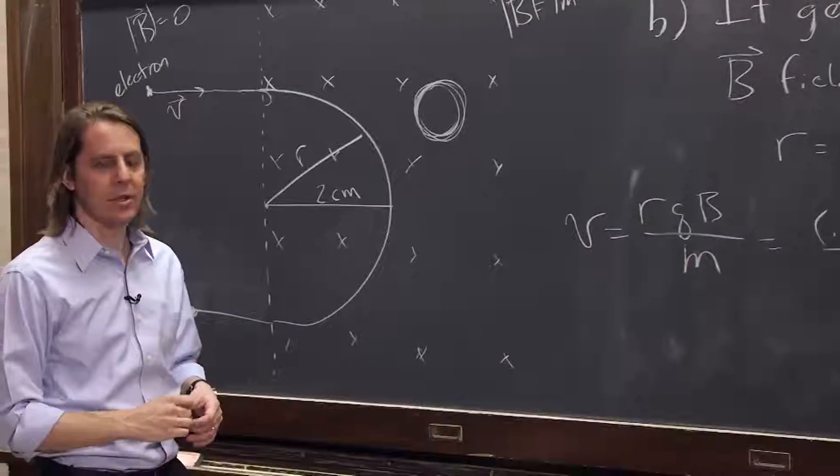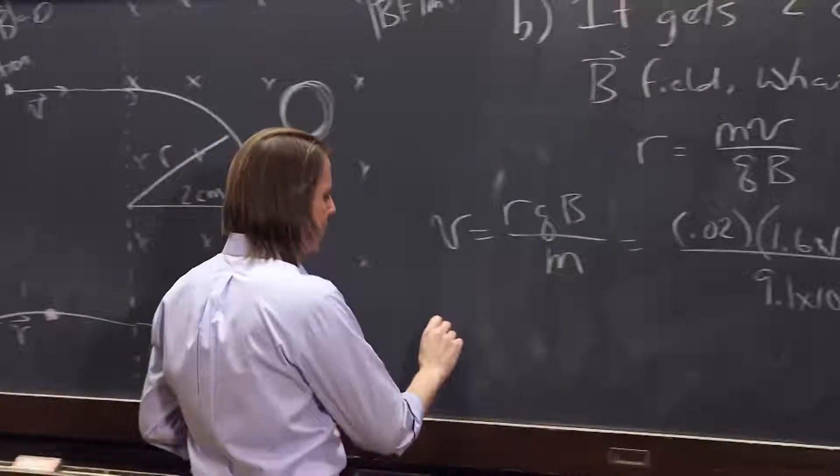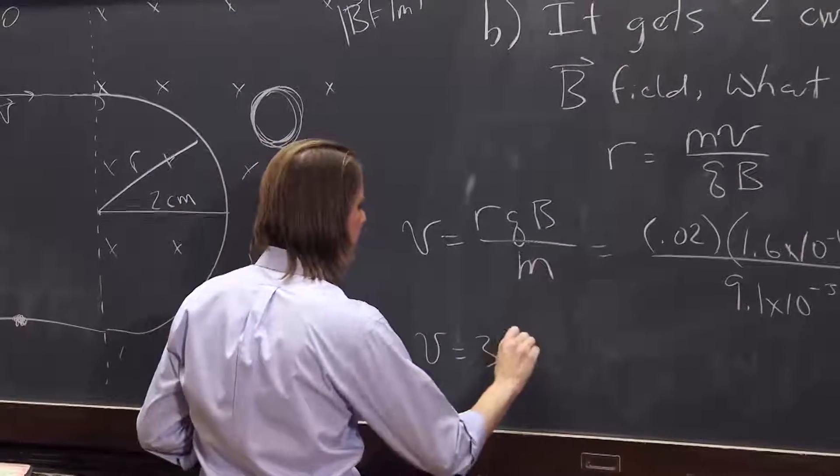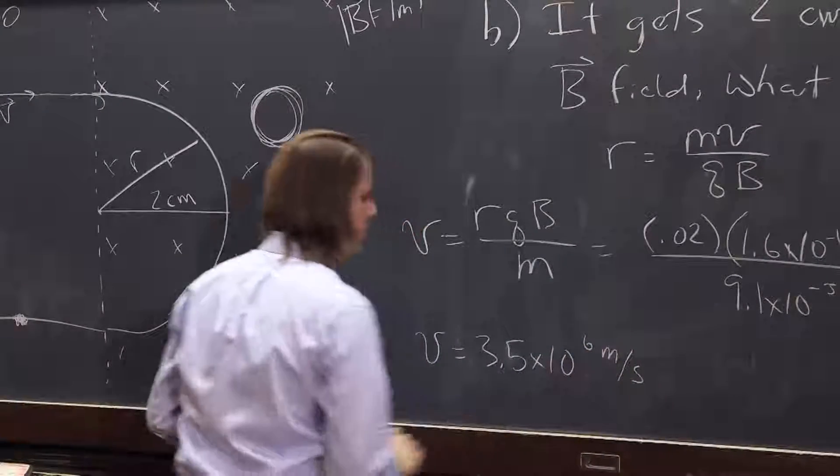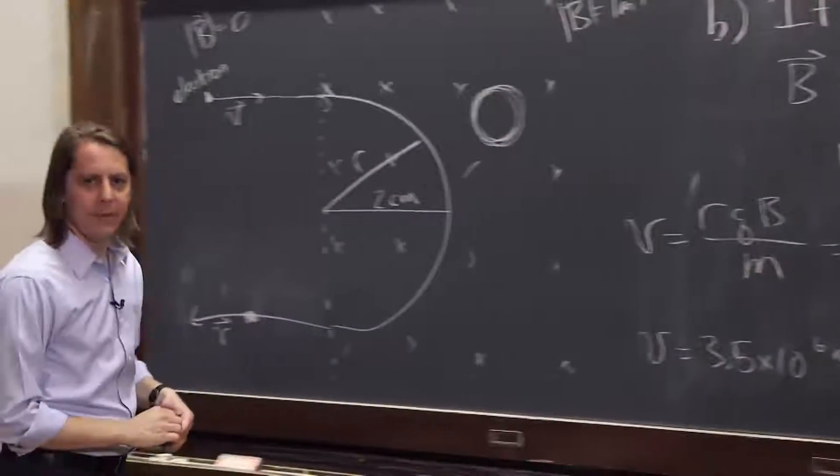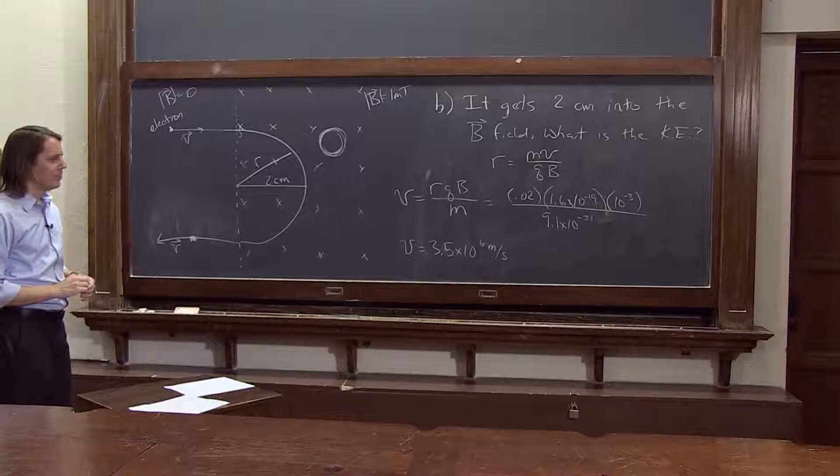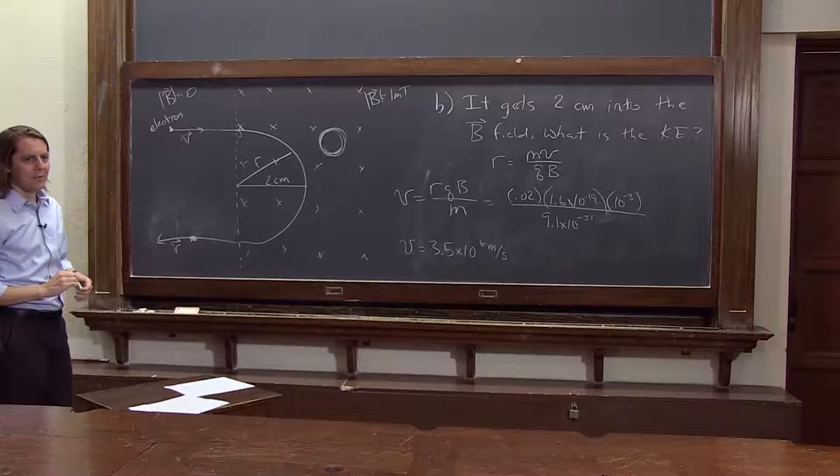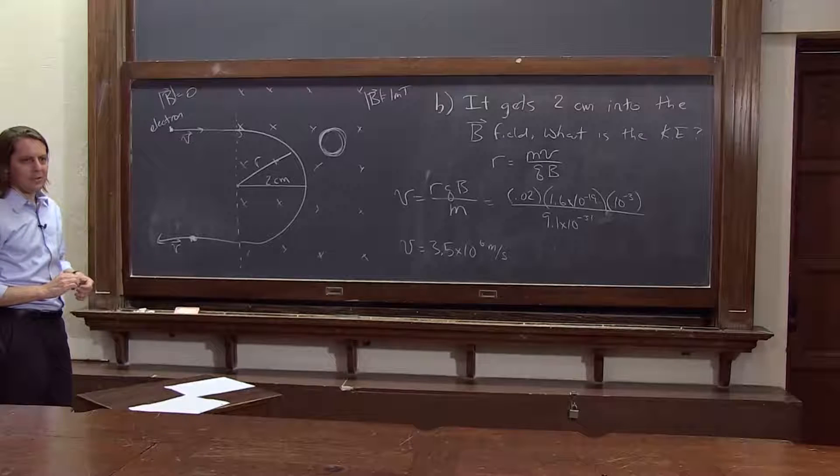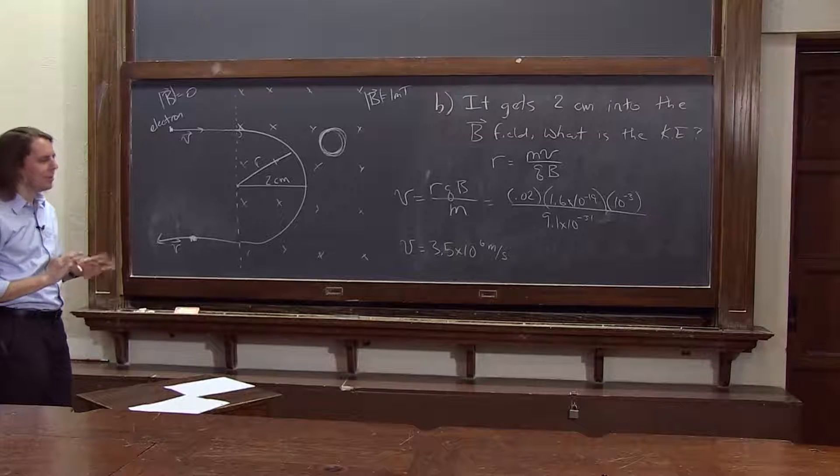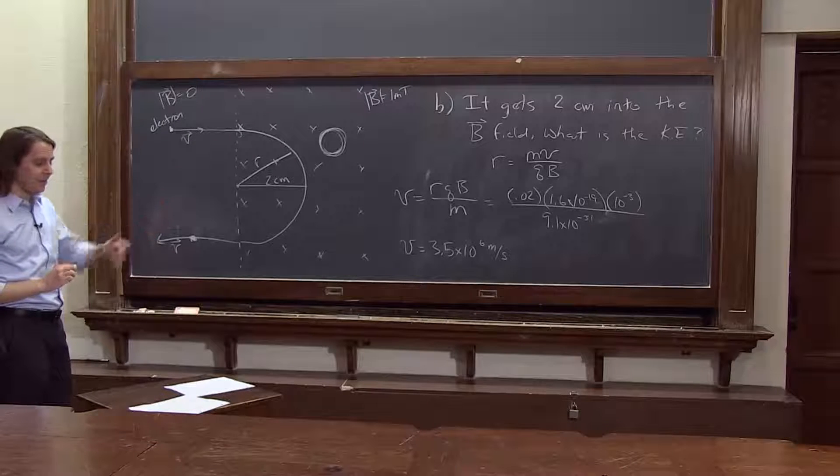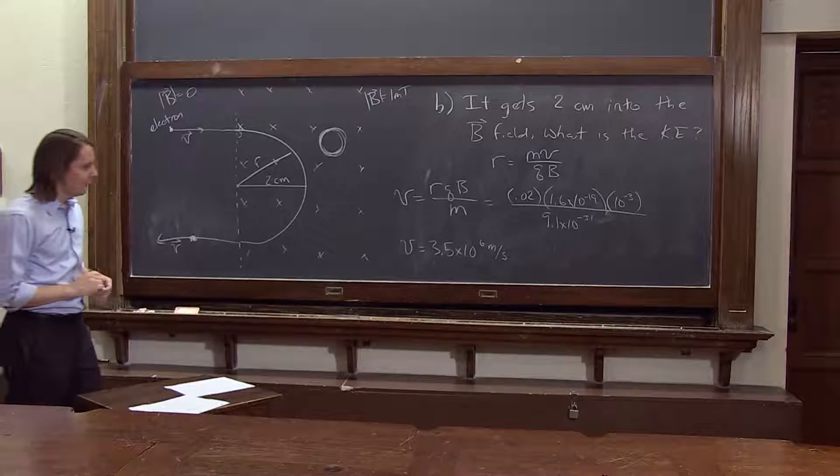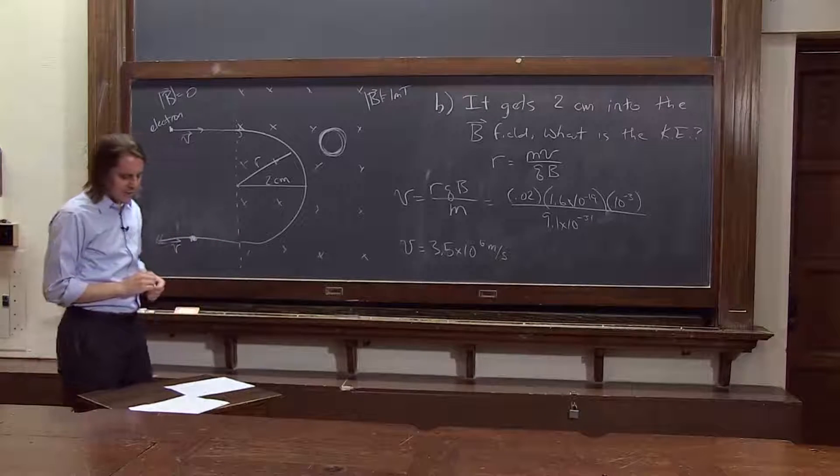Yes, an electron does not weigh much. If you do that, you get that the velocity is 3.5 times 10 to the 6 meters per second. That's really fast. So one good check in physics, whenever you calculate the velocity of anything, is make sure it's less than the speed of light. We would never give you a problem where it comes out greater than the speed of light. So in this case, it's very fast, but it is less than the speed of light, which of course is 3 times 10 to the 8 meters per second.